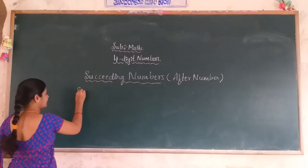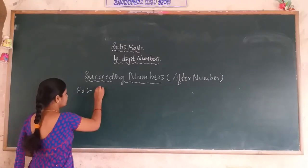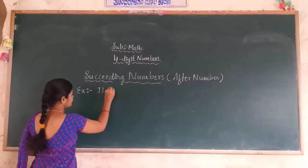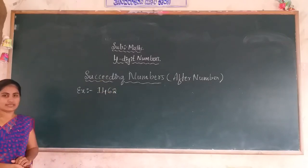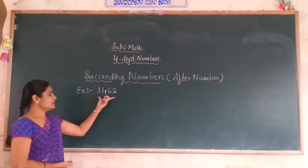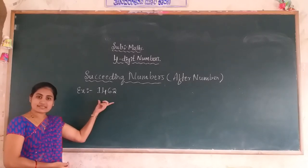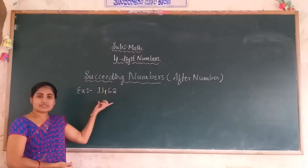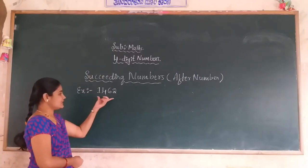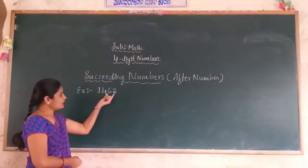Example 1: I give one 4-digit number — 1,462. This is a 4-digit number. You can find the succeeding number of this number. What is the succeeding number, or what is the after number of this number? You can easily find it. Look at the unit place and the tens place: 62 is there.